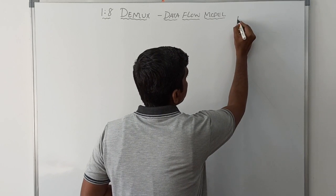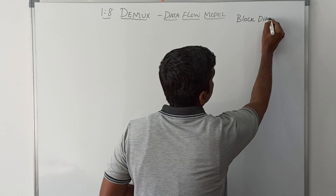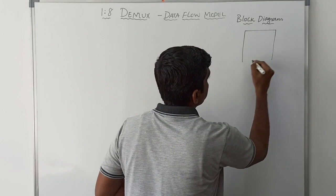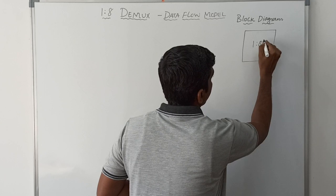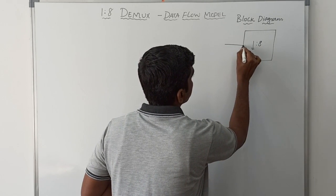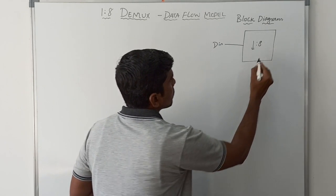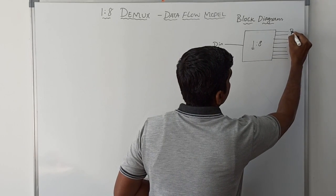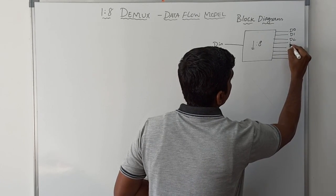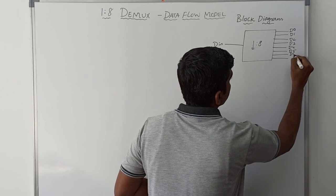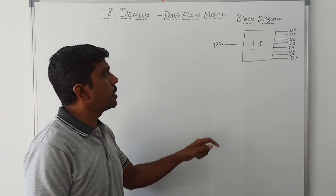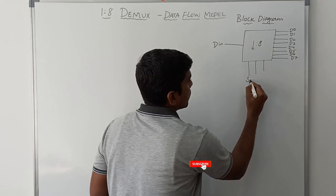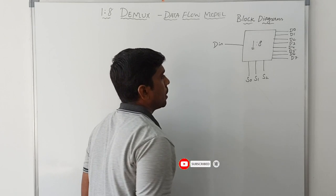First I will draw the block diagram of DMUX. It is a 1-to-8 DMUX. This '1' represents the input, DIN - Data IN. It releases 8 outputs: D0, D1, D2, D3, D4, D5, D6, and D7. These 8 outputs are based on the selection lines. Here we have 3 selection lines: S0, S1, and S2.